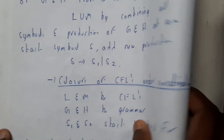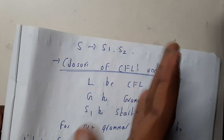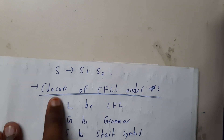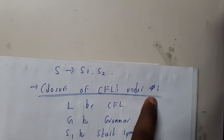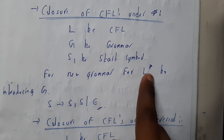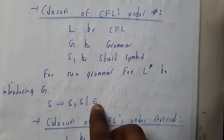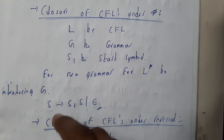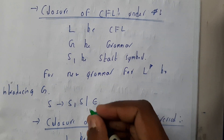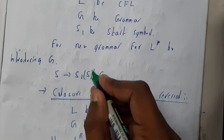Under concatenation, S tends to S1 dot S2 — after S1, S2 should follow. Closure of CFLs under star (Kleene closure) means there can be epsilon or S1 with any number of repetitions — basically any number of S1s.